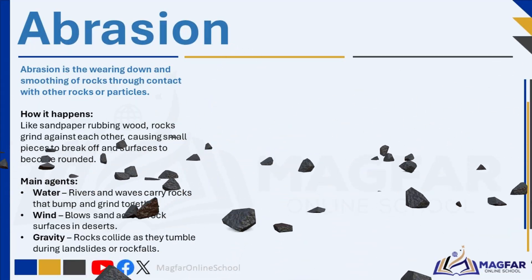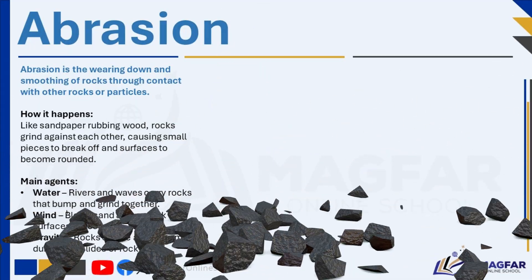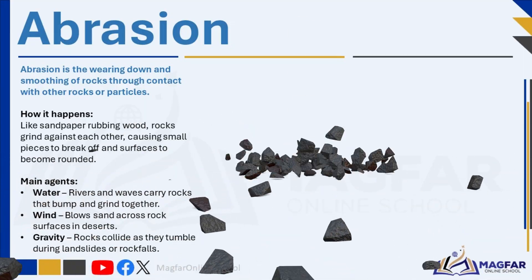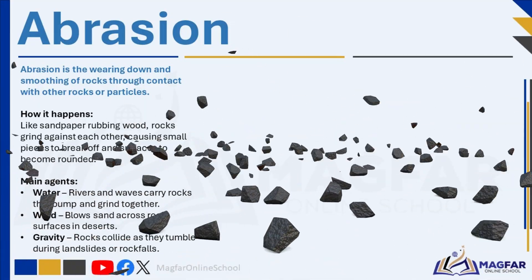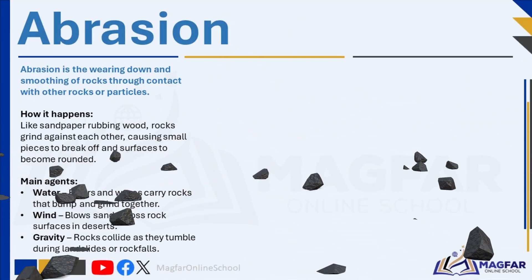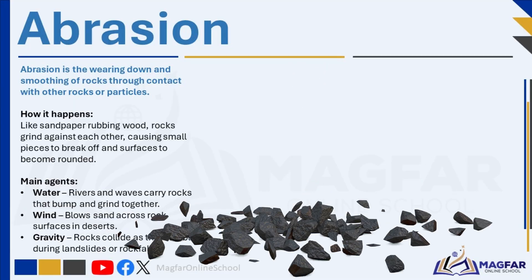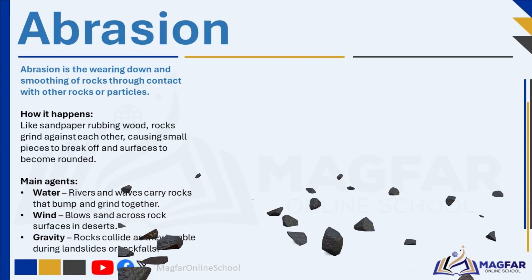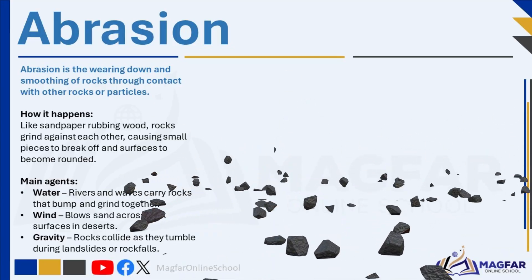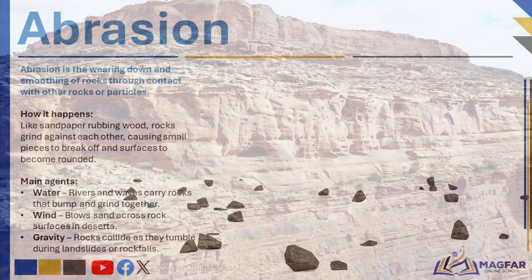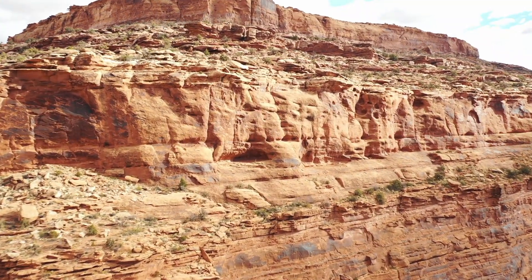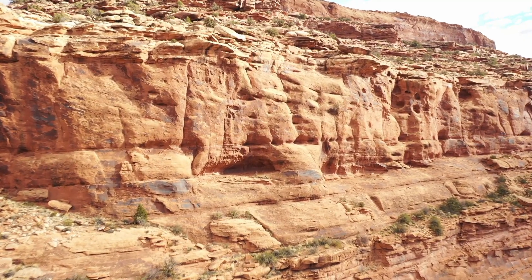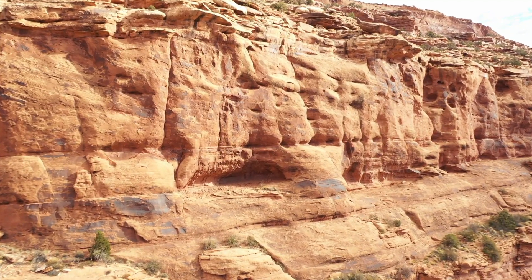Gravity contributes to abrasion during events like landslides or rock falls, as rocks tumble down slopes and collide and scrape against each other, breaking into smaller, more rounded pieces. Overall, abrasion is a mechanical process — it alters the shape and texture of rocks without changing their chemical makeup. Over long periods, abrasion plays a major role in reshaping landscapes, particularly in environments with strong winds, flowing water, or frequent rock movement.